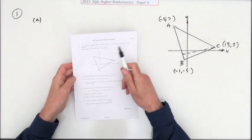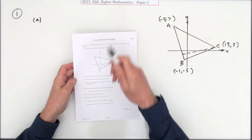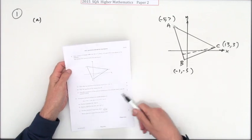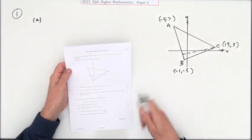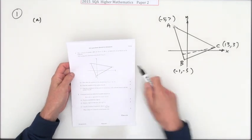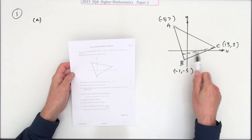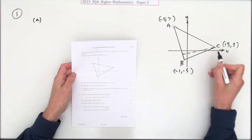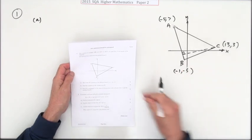Question one, the first one in paper two of the old Higher Mathematics 2015 paper, is a lines question. All together there's nine marks. There's this triangle that's got this dotted line drawn in and it says that represents an altitude, so that's a right angle.